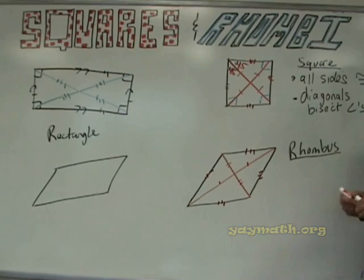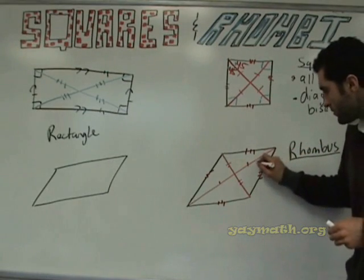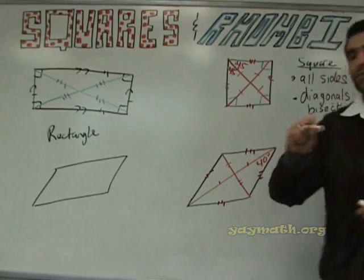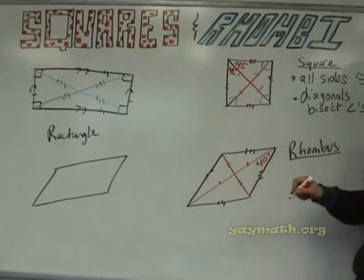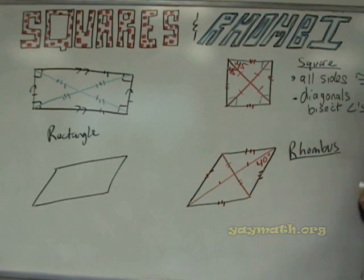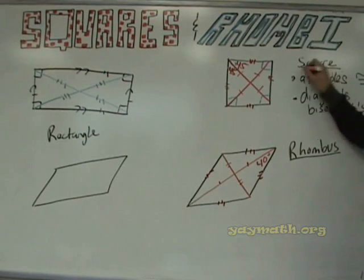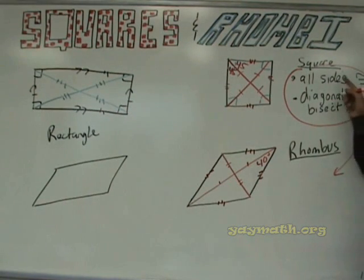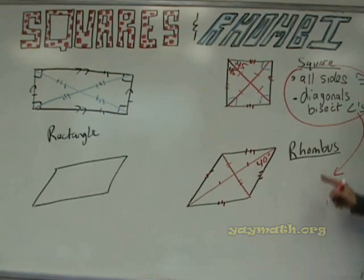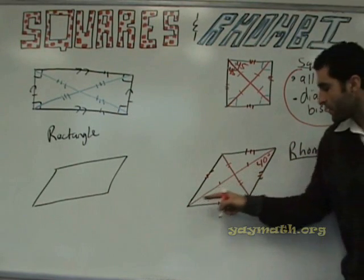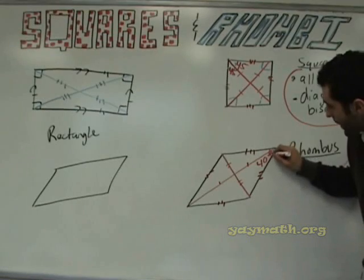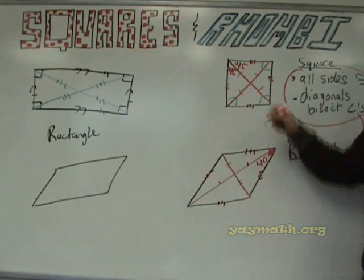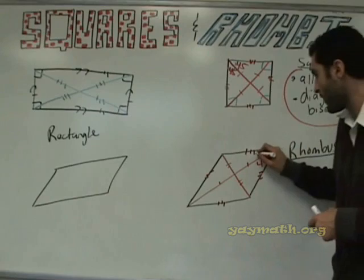Let's get into it. What if this angle is 40 degrees? Remember this rule — diagonals bisect. Do the diagonals bisect each other in the rhombus? Yes. Diagonals still bisect each other, and these rules apply here. So if this diagonal bisects this whole angle, what's this angle here? 40 degrees. Very good.